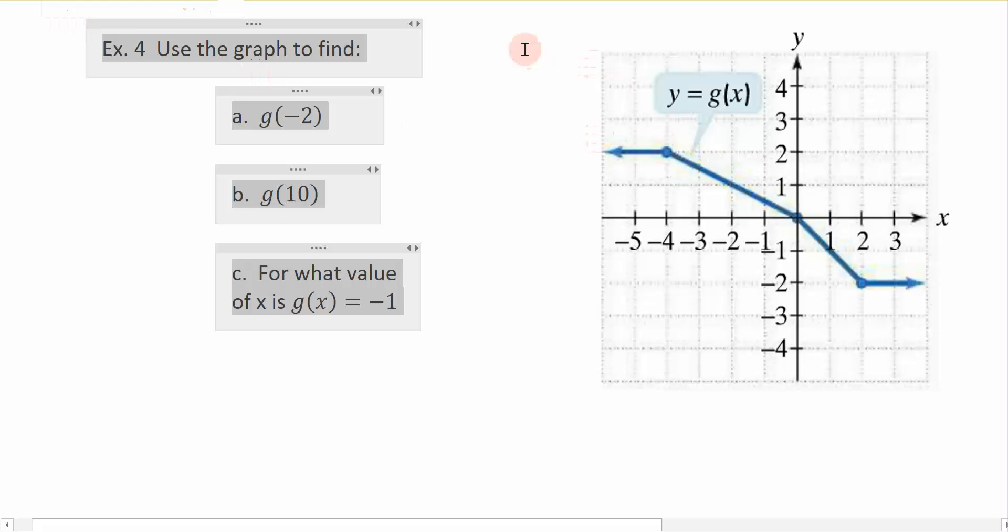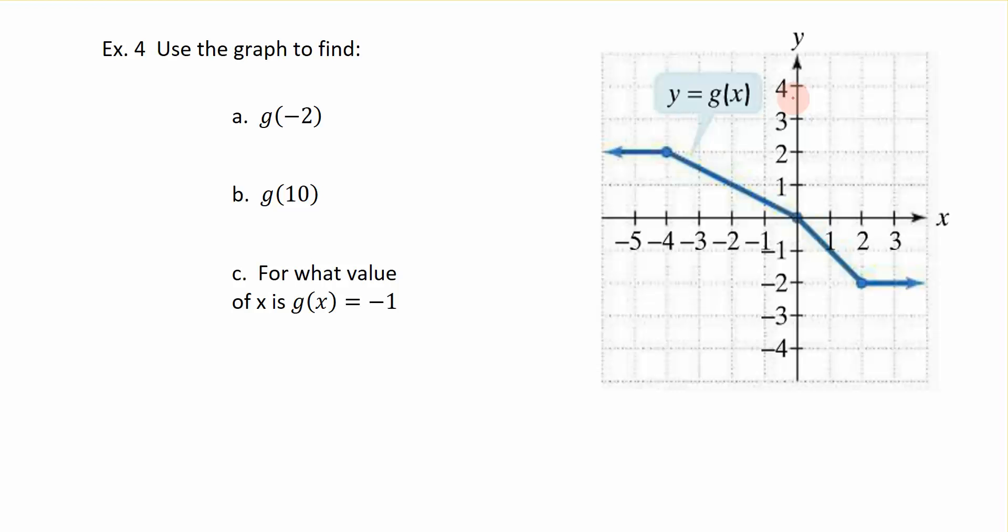So let's look at this example then together. I want to use the graph that's given over here to evaluate the function for different values or at different places. So the first one I'm looking at says, what is the value of the function when I let x be negative 2? So on the x-axis, I'm going to go find negative 2 and I'm going to slide up to the function and find out where is that point on the graph? And that is occurring at positive 1.